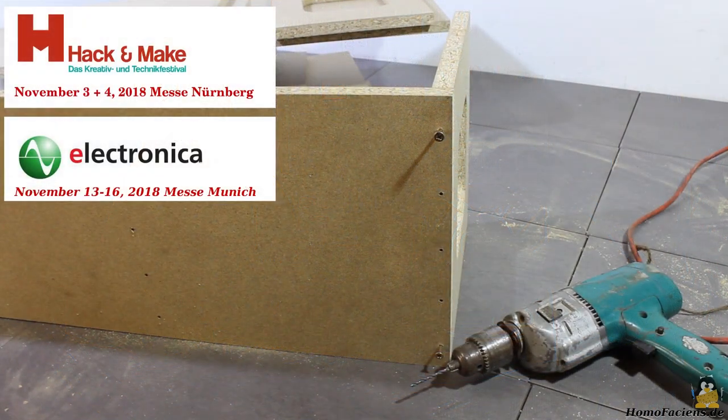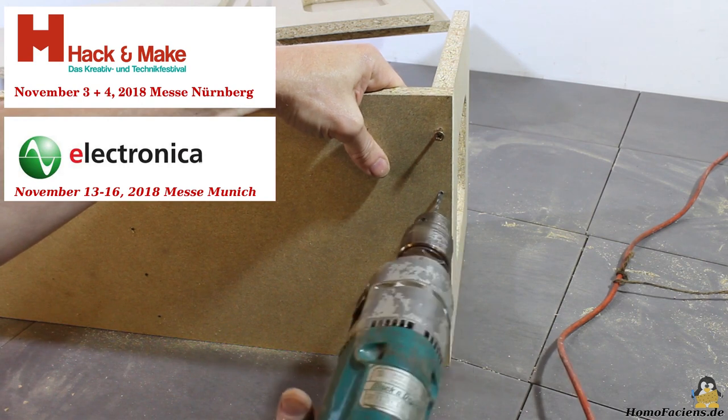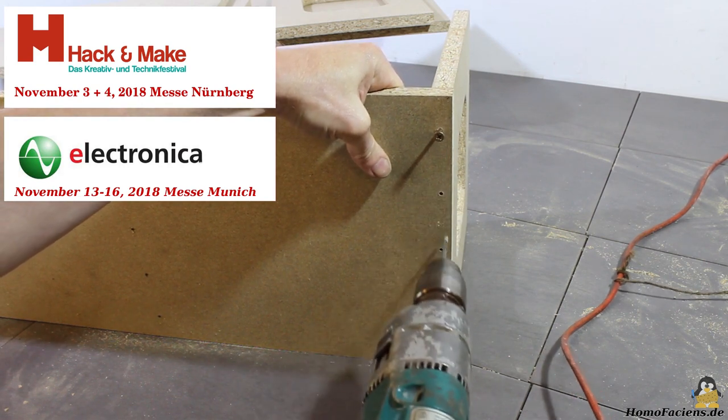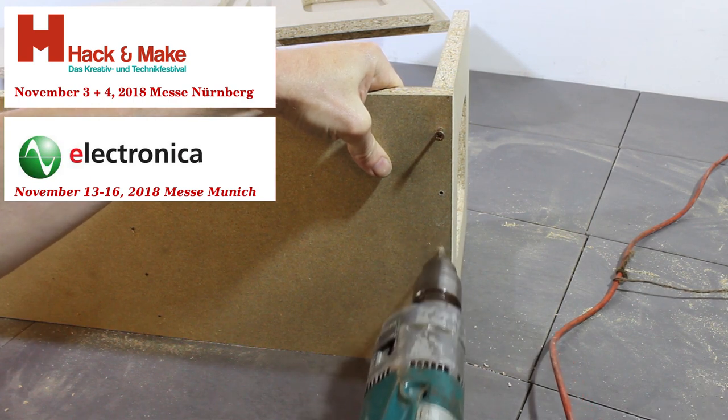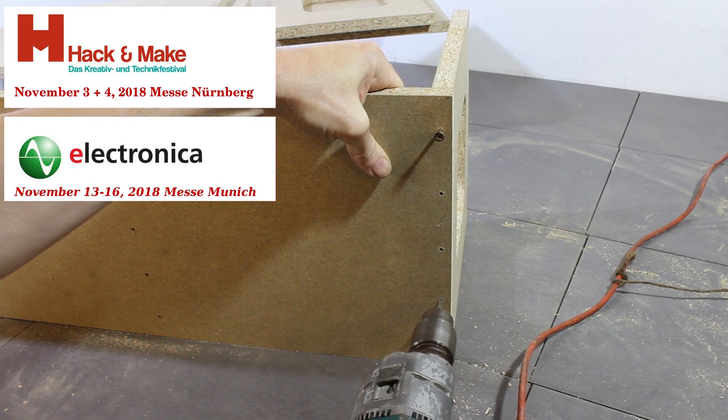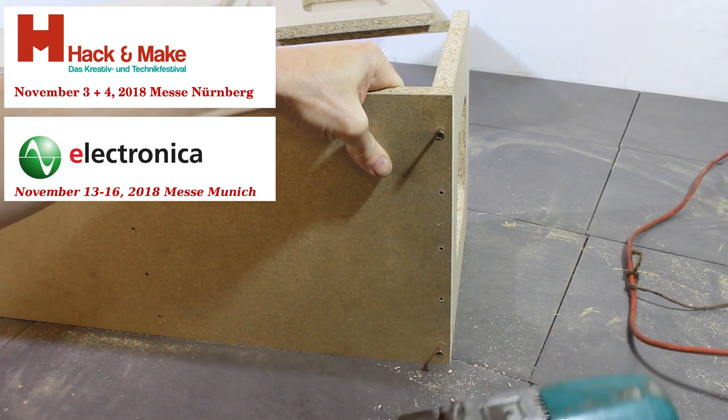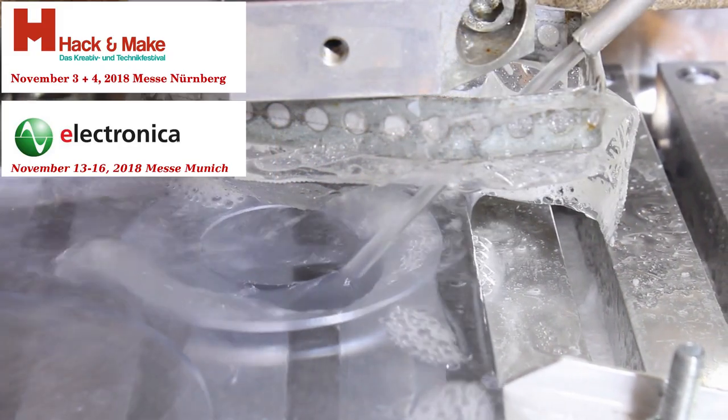You can have a close look at the latest evolution step of my CNC machines on the Hack and Make in Nuremberg as well as on the Electronica in Munich. The Hack and Make takes place on the Nuremberg Messe on November the 3rd and 4th. My CNC version 3.2.2 with SIMATIC IoT 2020 is displayed on the stand of my sponsor Siemens. You can have a talk with me and get a sample made by this machine if you come for a visit.